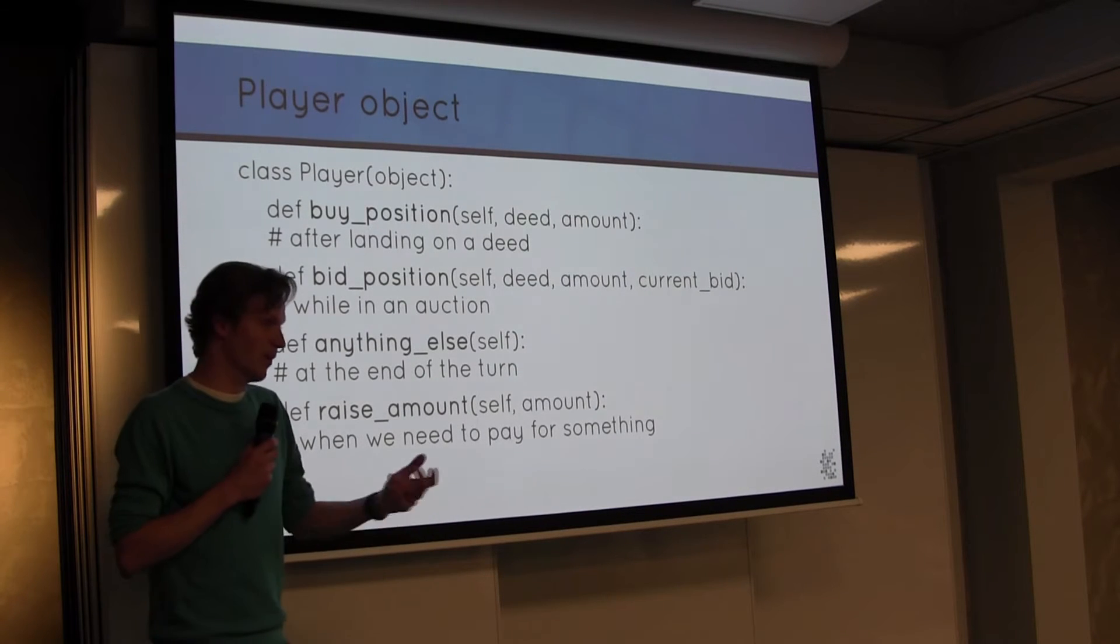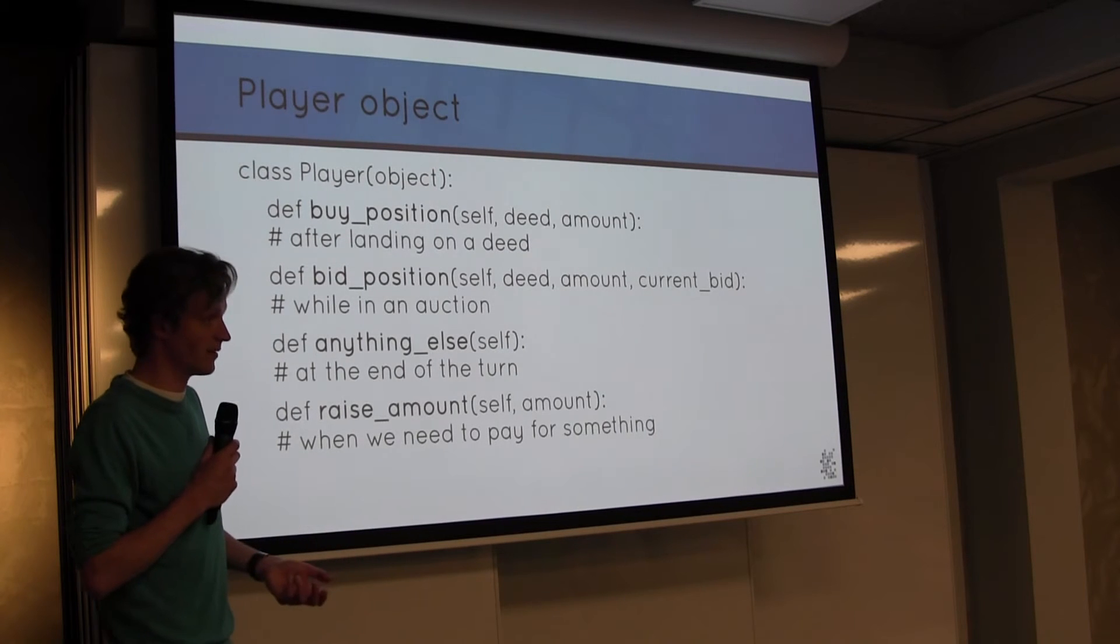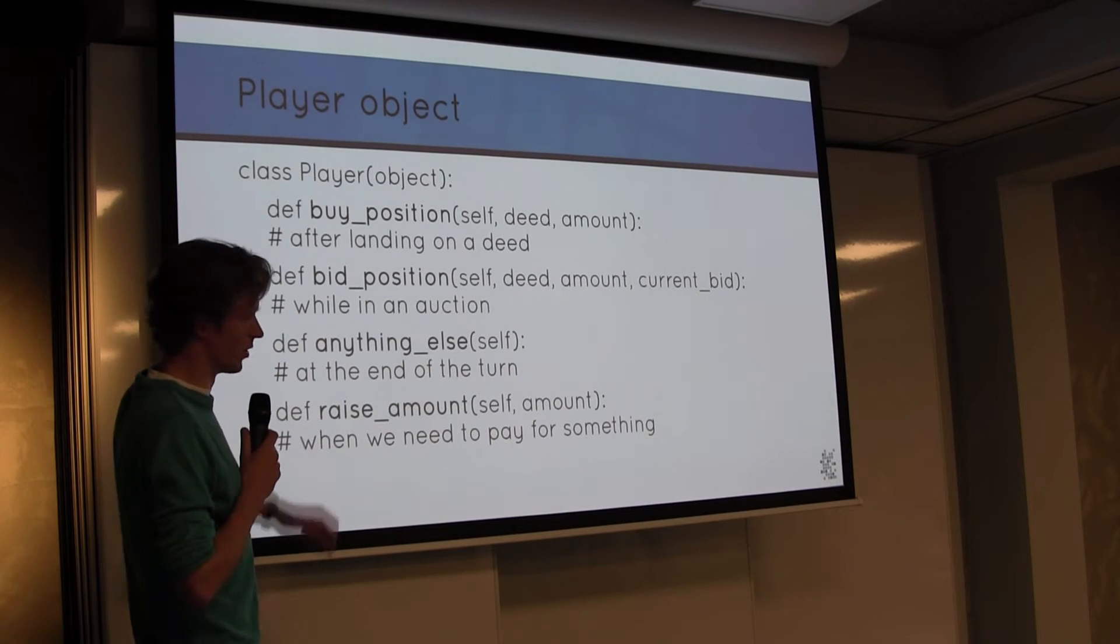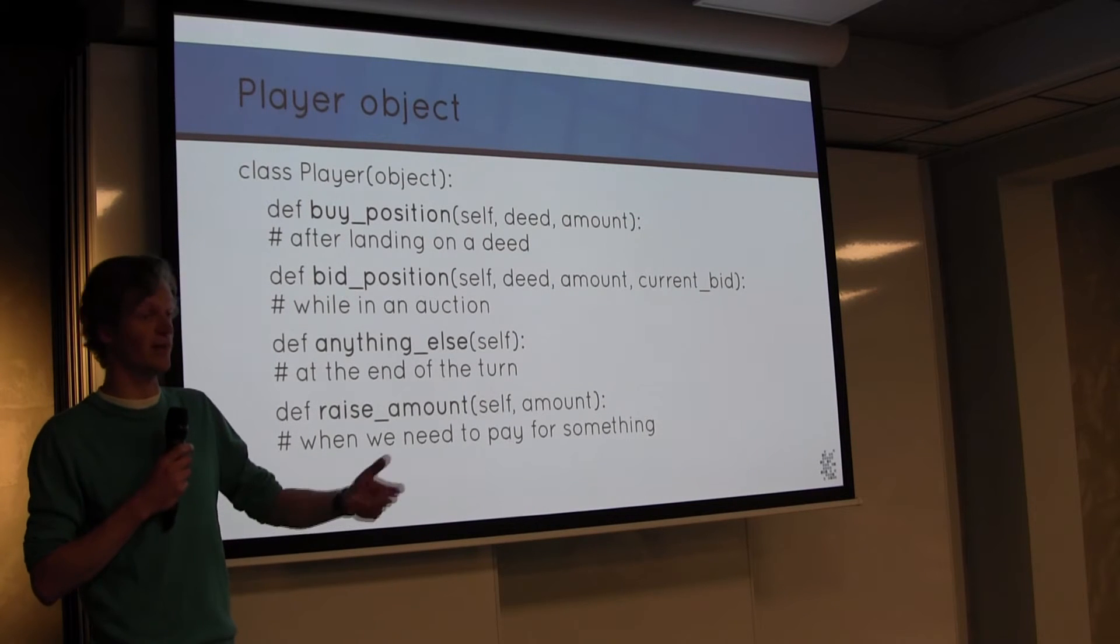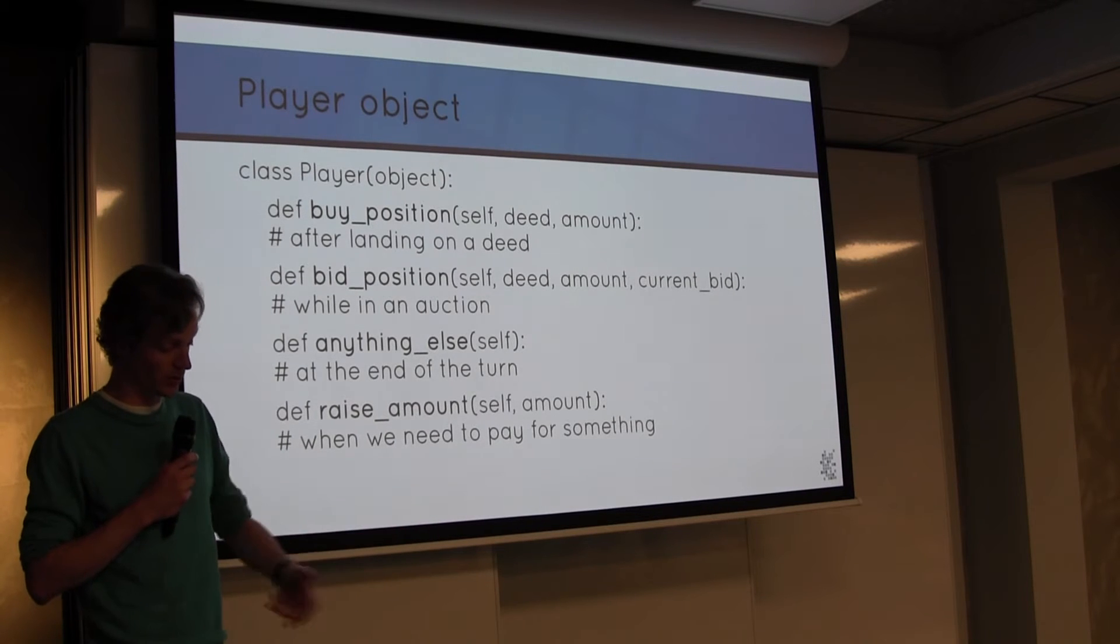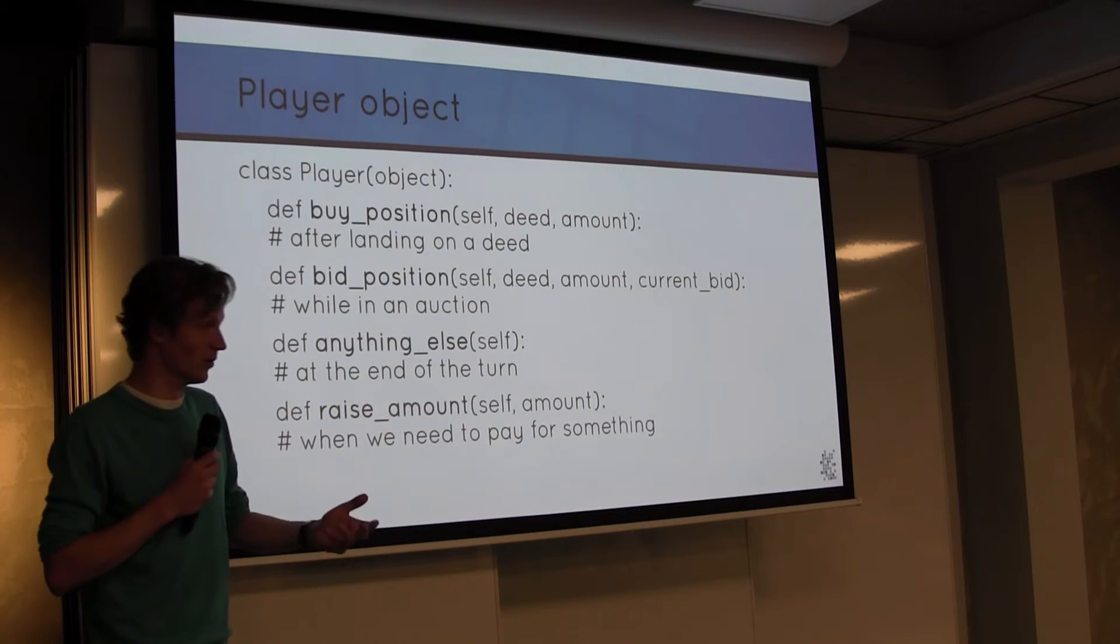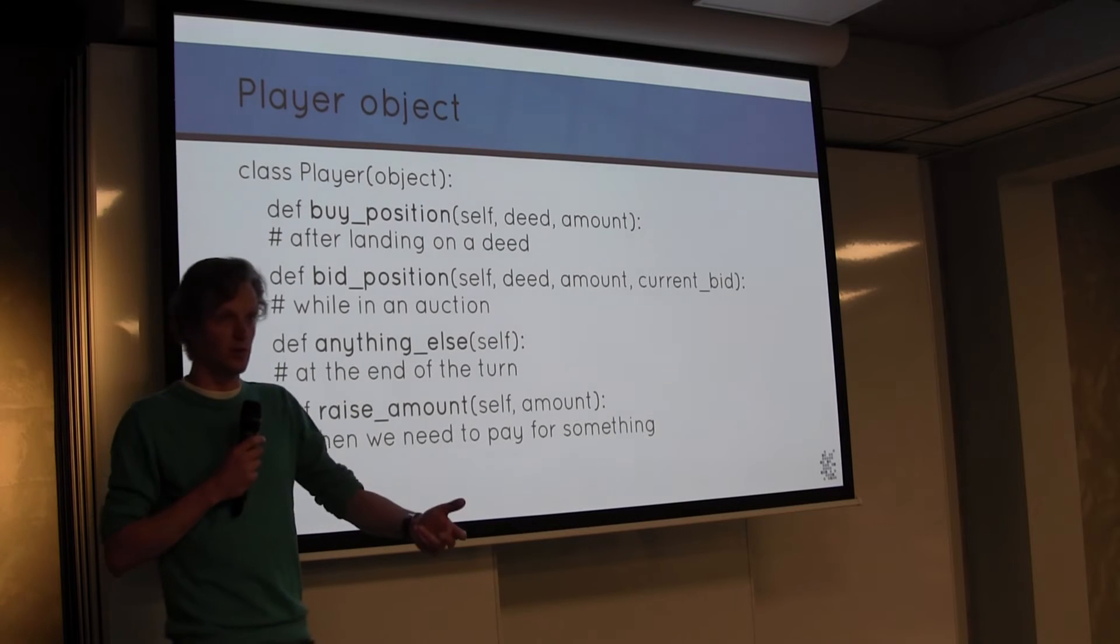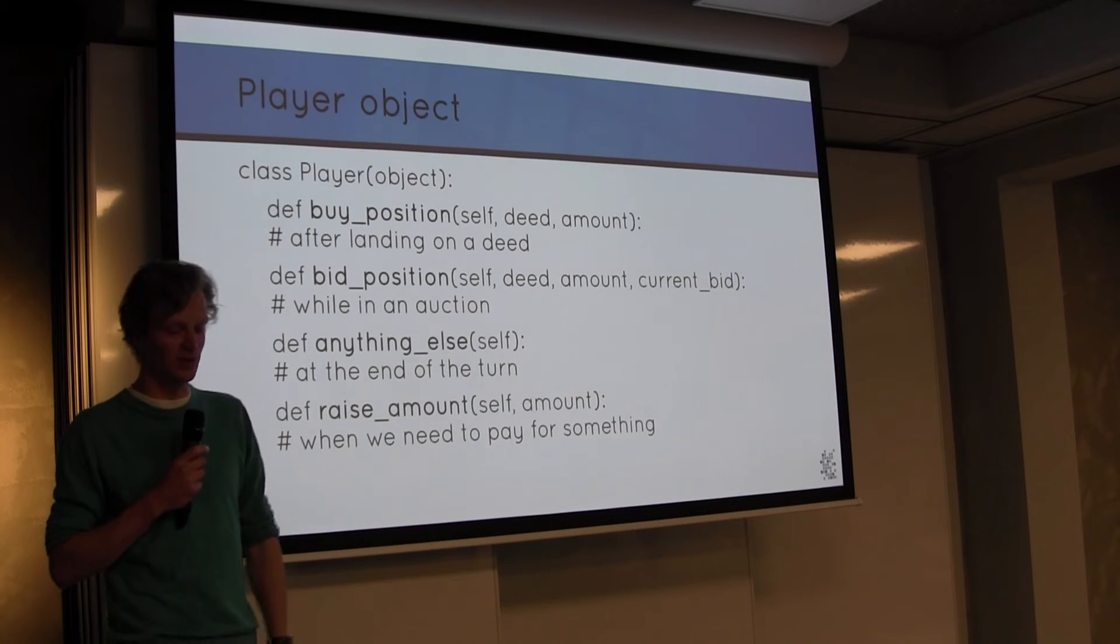So this player object is basically what this talk resolves around. You can implement your own AI players by implementing those four methods. So you can buy a position, or a method is called after you land on a position you can buy. If there's an auction, this bid position is called. Anything else, it's basically the end of the turn, you can do anything you like. And there's a raise amount: if you need to pay rent to some other player and you don't have enough cash left, you need to sell something, you can decide what to sell.